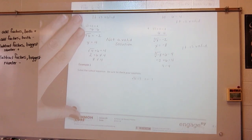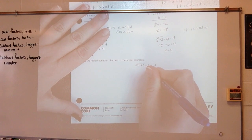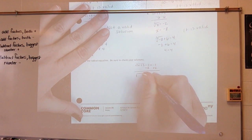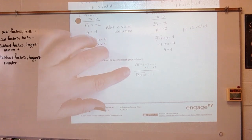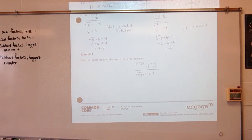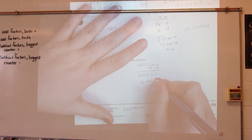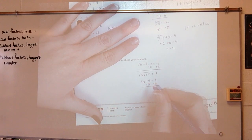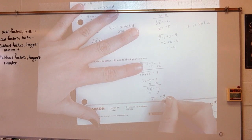Let's look at example 1: solve a radical equation, and be sure to check your solutions. The first thing I'm going to do is isolate the radical — add 2 to both sides. So we have the square root of 3x plus 5 equals 1. To eliminate that radical, square both sides. When I square a radical, I get what's under the radical. 1 squared is 1. Now I subtract 5: 3x equals negative 4. Divide by 3: x equals negative 4 thirds.